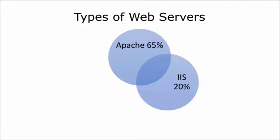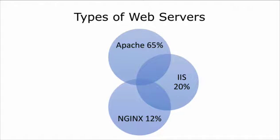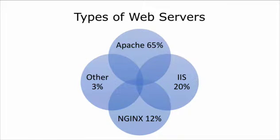Next up is Microsoft's IIS at about 20% of the market, growing substantially with Azure cloud where applications are provisioned directly and generally run on IIS. That is followed by Nginx at around 12%, used by very large websites like Facebook and Twitter because of its very good multi-threading capability. All others make up just 3% of the market. From a penetration testing perspective, focusing on Apache and IIS covers 85% of the market.